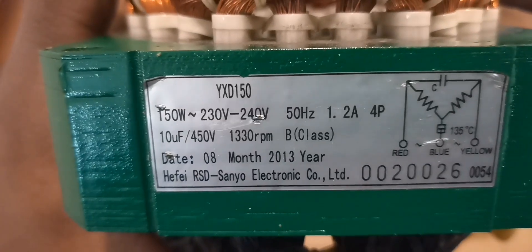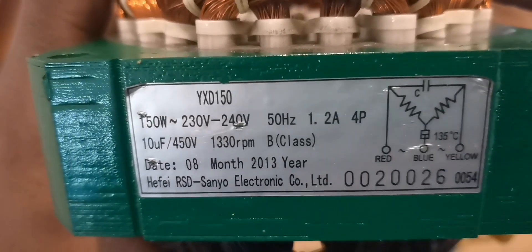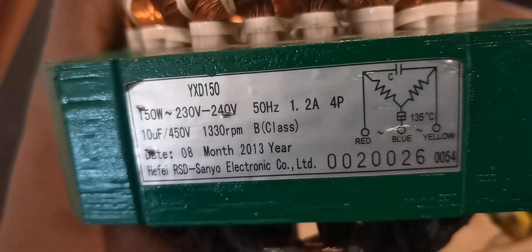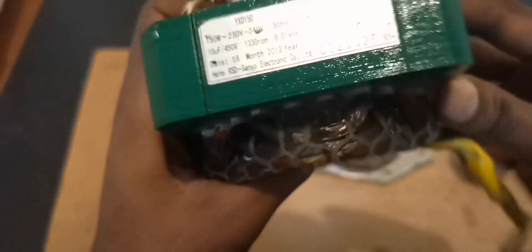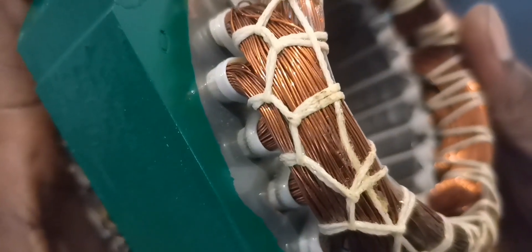150 watts, 230 volts, 240, 50 hertz, 1.2 amps. Okay, so before I go far, check out the wires. They are 0.5 millimeters, which is thick enough to produce enough voltage to power a big load.